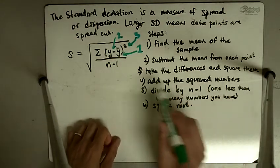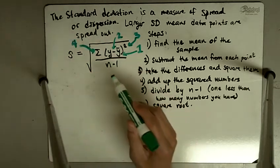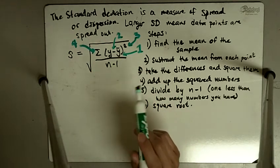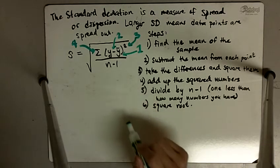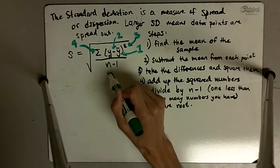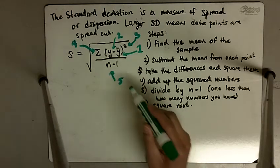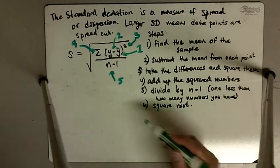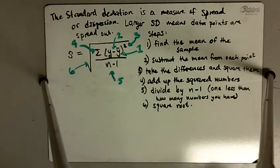Add up the squared numbers is given by this summation form, the summation symbol. It looks like an e or a sideways m, but it's actually the Greek letter sigma, sigma for sum. Step 5 is to divide by n minus 1. So we see that in the denominator of this fraction. And the last step to take the square root is all the way there on the outside.